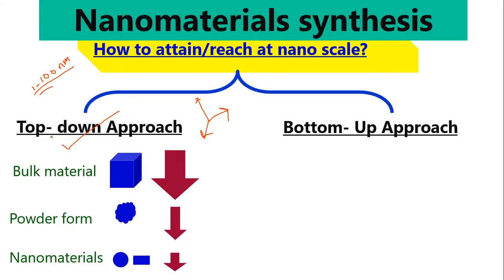The top-down approach means we start with a bulk material — like a block — and we cut it, making slices using physical methods such as cutting, milling, or etching. We break this bulk material down into small slices or powder through grinding, so at the second stage we get it in powder form.